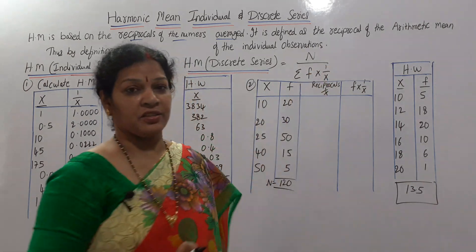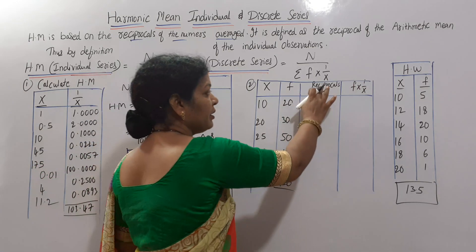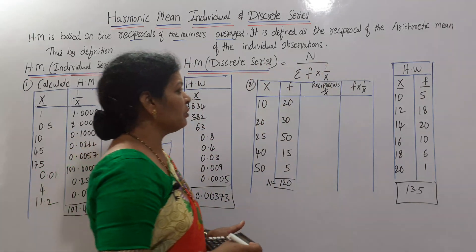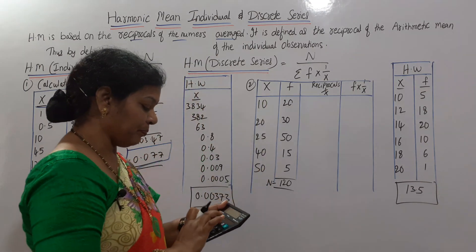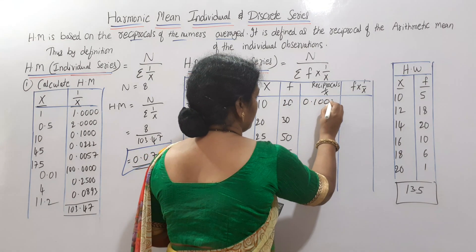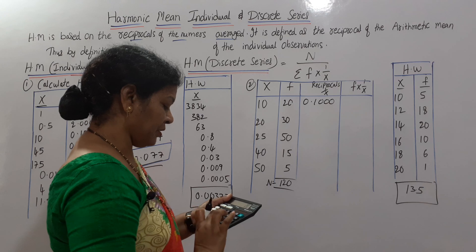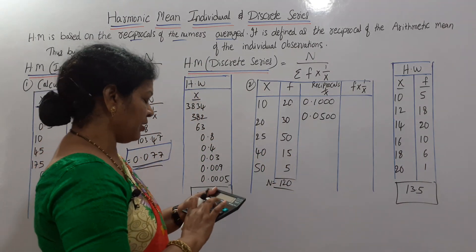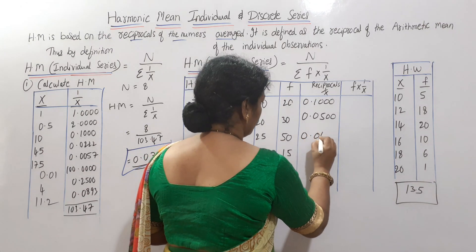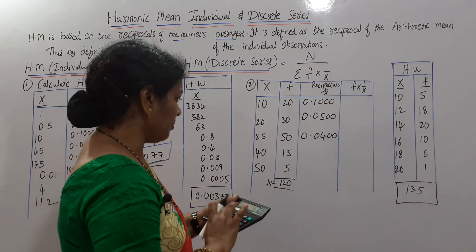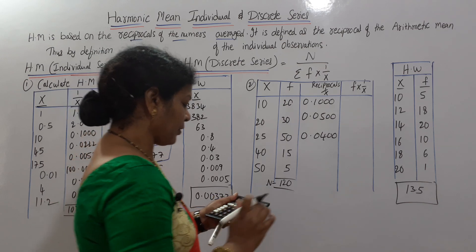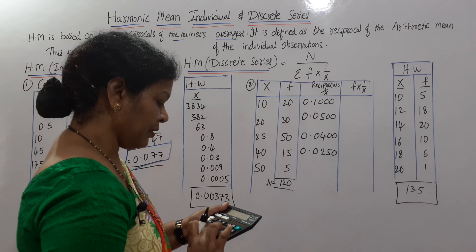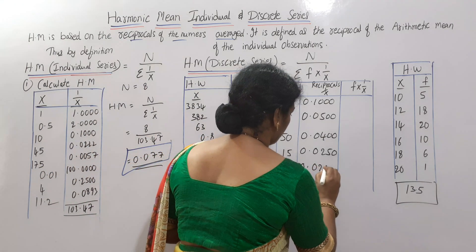Next we need f × 1/x. As per the formula, first we will calculate 1/x — the reciprocals. Then multiply with f. 1/x calculations: 1 divided by 10 is 0.1. 1 divided by 20 is 0.05. 1 divided by 25 is 0.04. 1 divided by 40 is 0.025. 1 divided by 50 comes to 0.02.